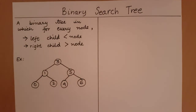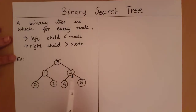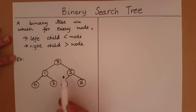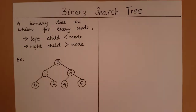For every node in this example, let's take node three: the left child one is less than three and the right child five is greater than three. For node one, the left child zero is less than one and the right child two is greater than one. For node five, the left child four is less than five and the right child six is greater than five. If this property holds for every node, it is known as a binary search tree.